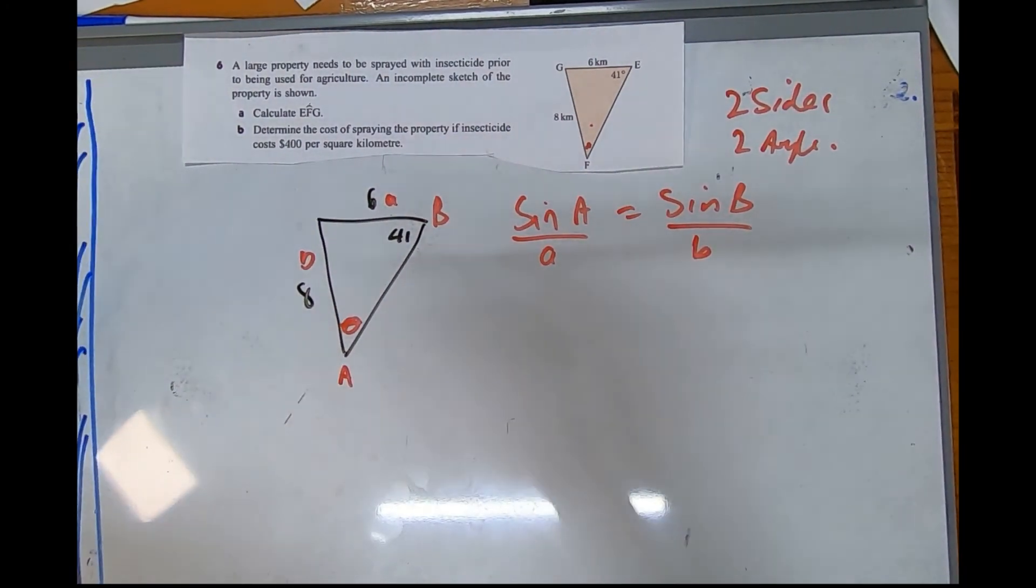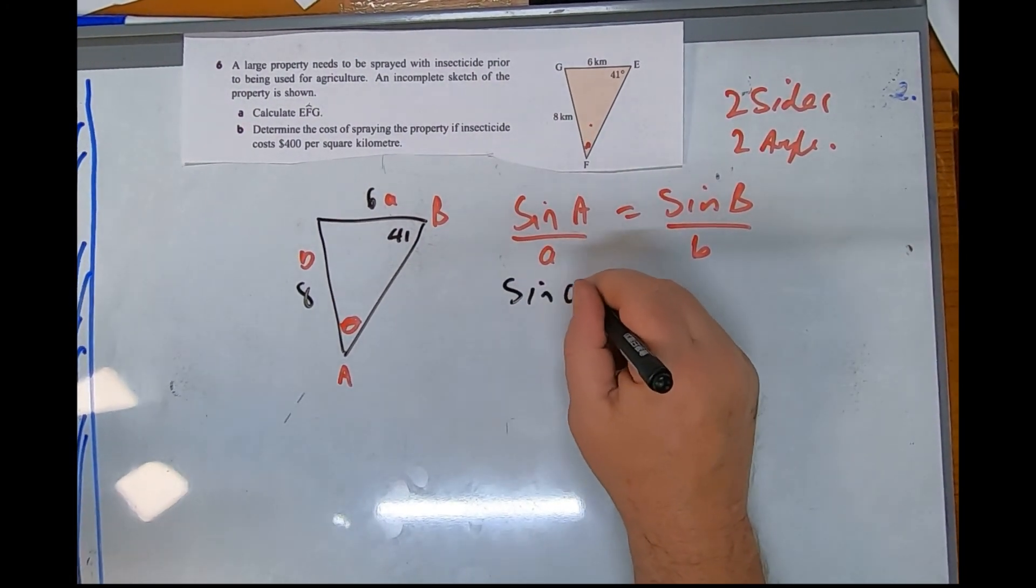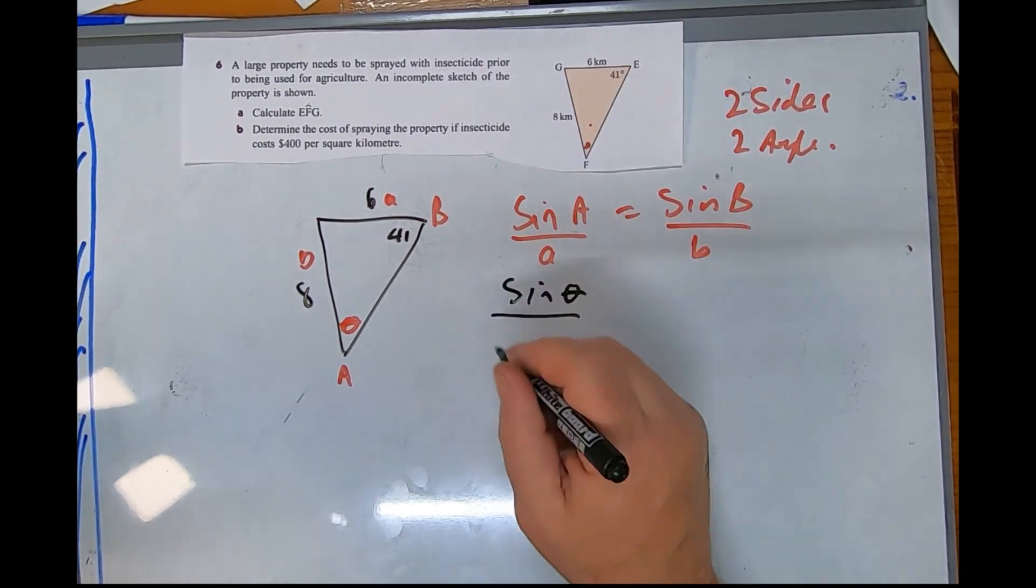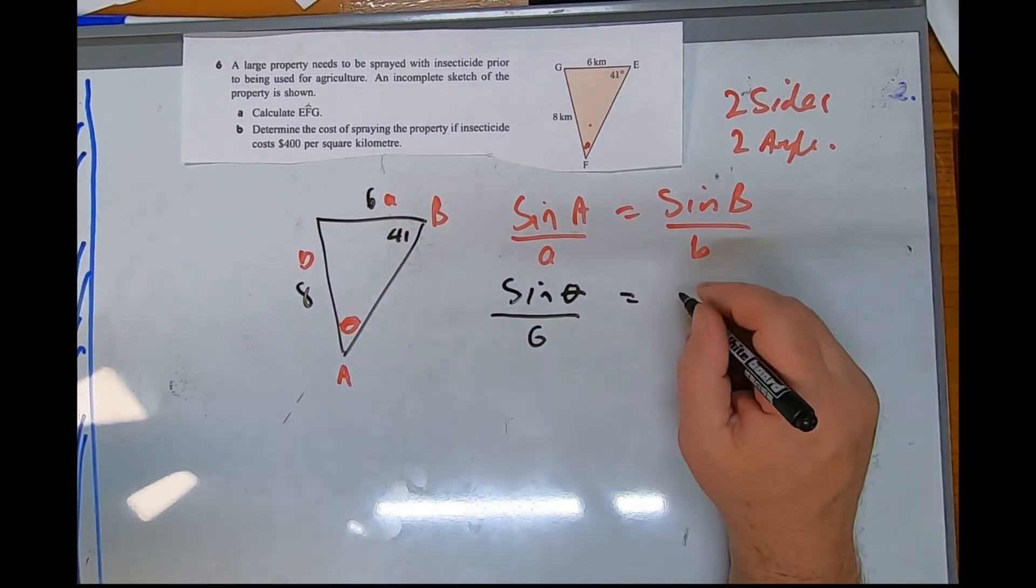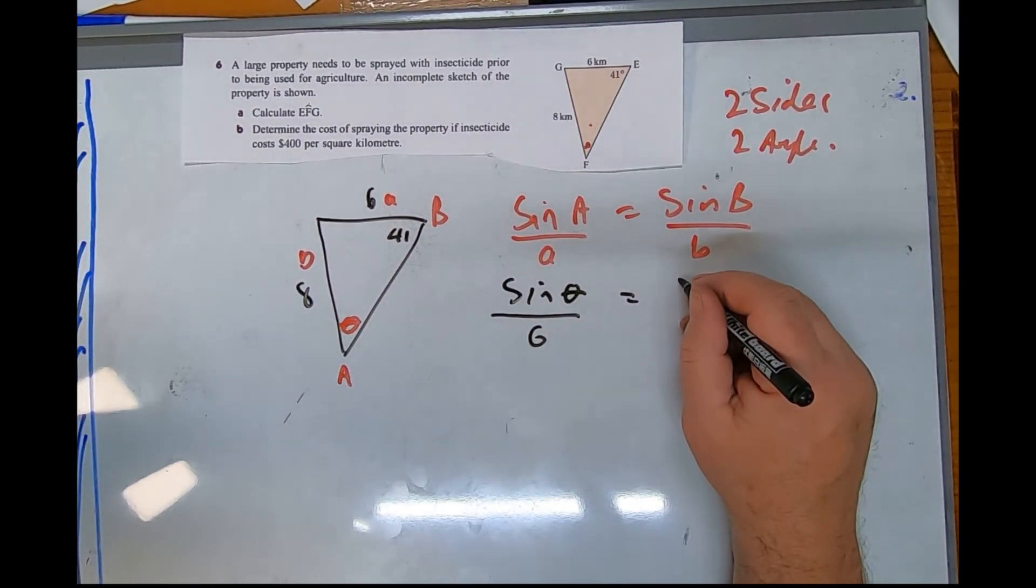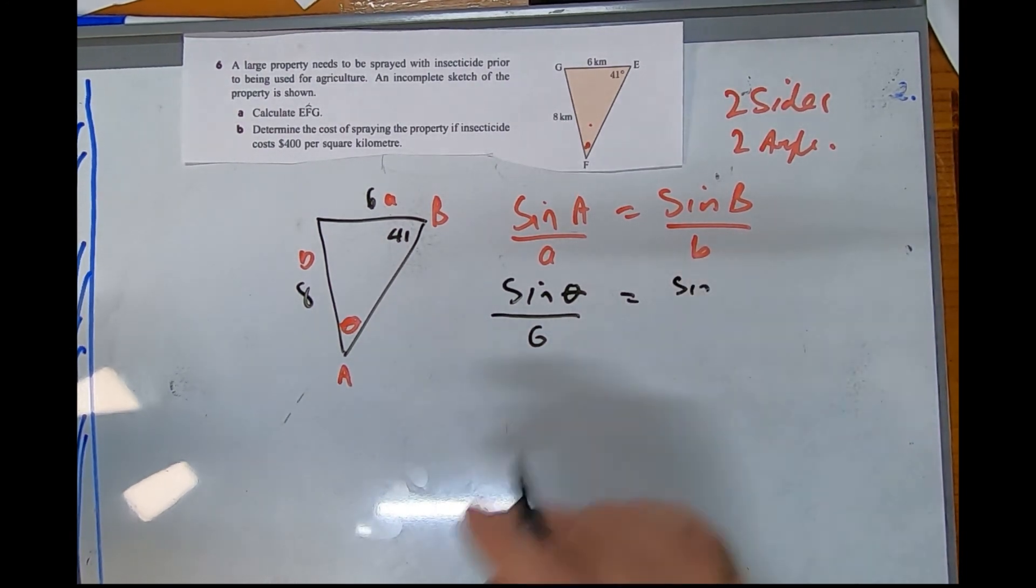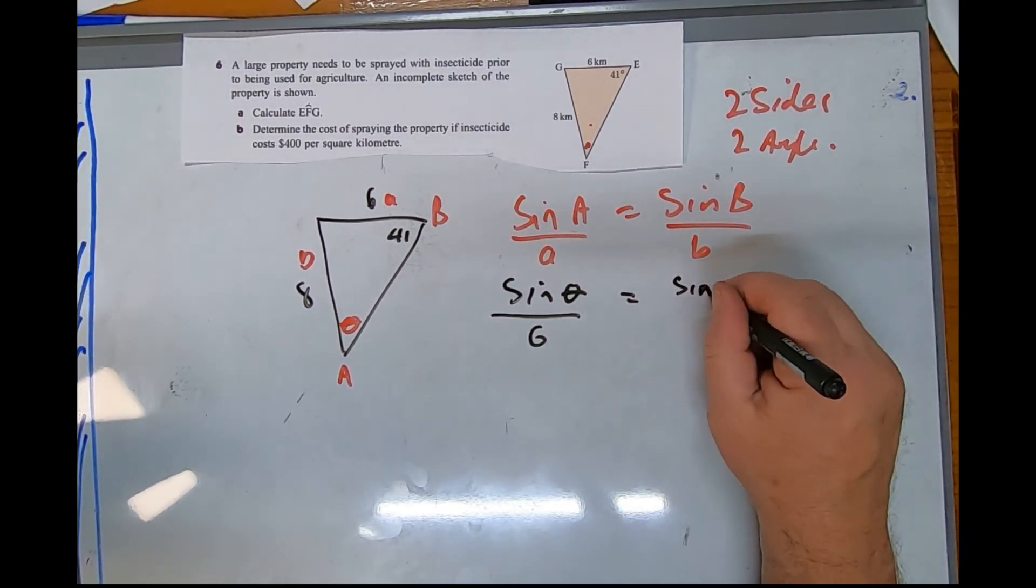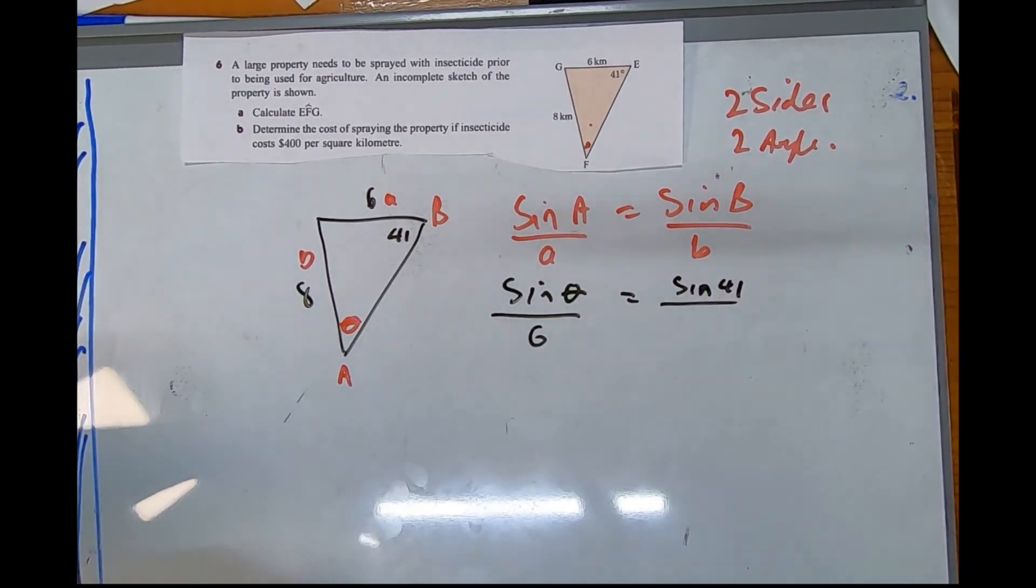Now substitute. Sine of A is the one we're looking for, so we don't know what that is. It's opposite side six. And next to here, this angle is sine 41, sine 41 is...